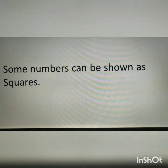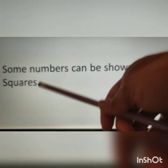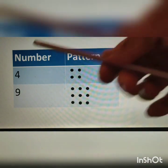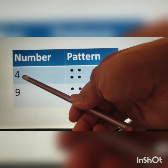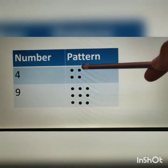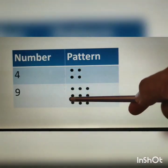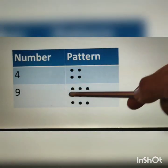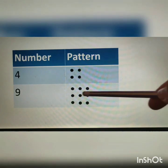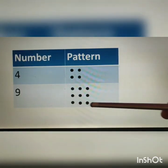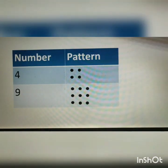Some numbers can be shown as squares. For example, number 4: here 4 dots are used to represent a square. Next, number 9: here 9 dots are used to show a square pattern — arranged in 3 rows of 3.